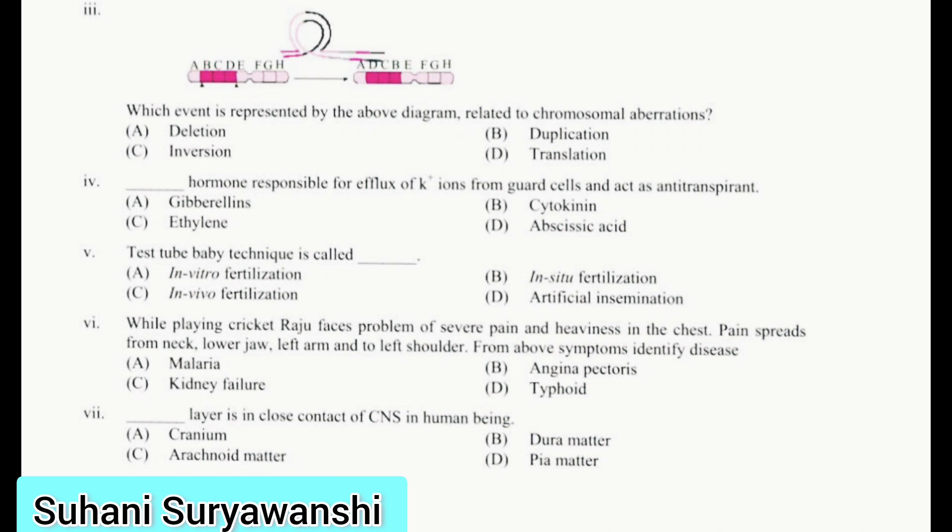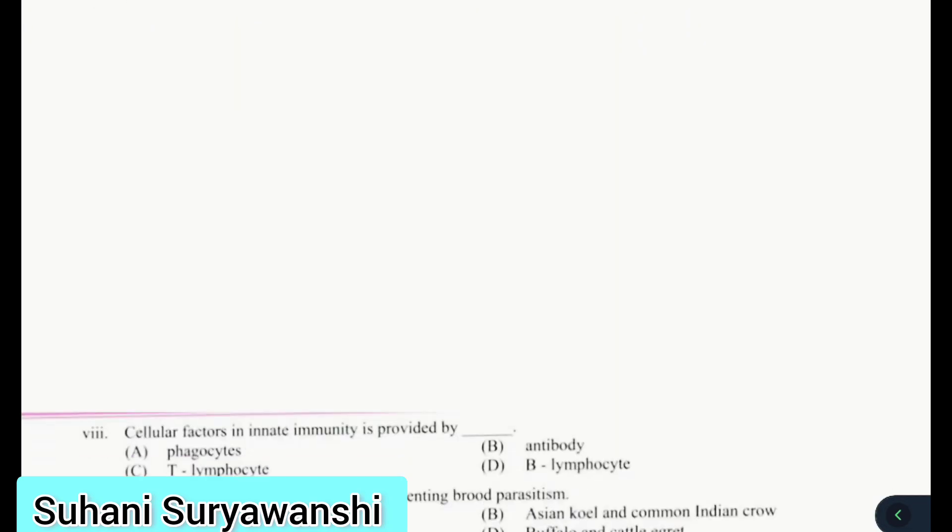While playing cricket, Raju faces problem of severe pain and heaviness in chest. Pain spreads from neck, lower jaw, left arm to left shoulder. From these symptoms, identify the disease. Severe pain and heaviness in chest spreading to neck indicates angina pectoris. Next, which layer is in close contact with CNS in human being? That is pia mater.